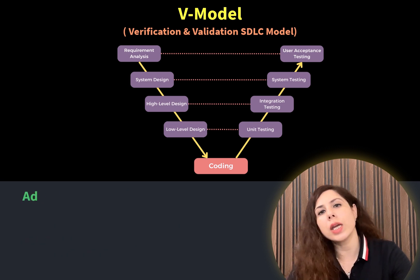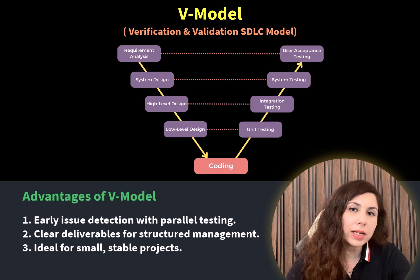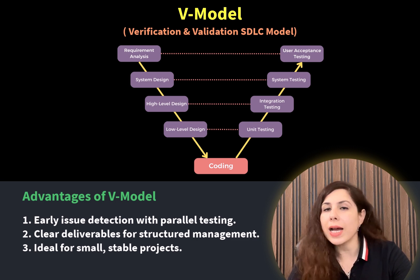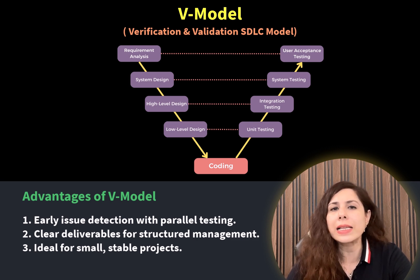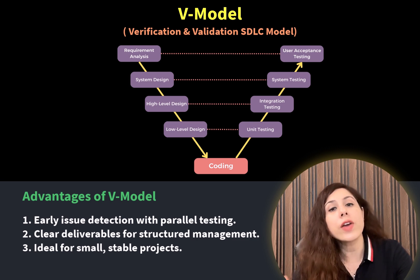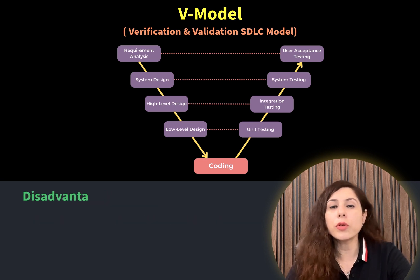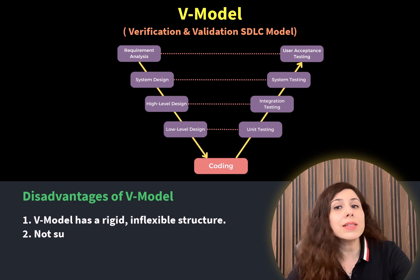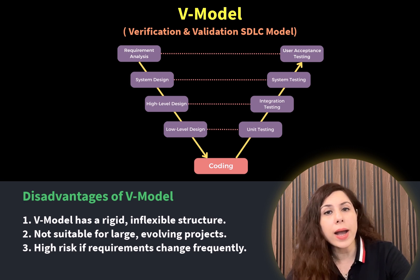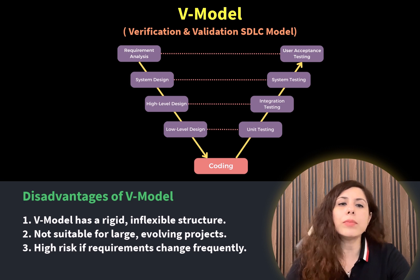Let's discuss some advantages of V-Model. V-Model helps in early detection of issues since testing happens in parallel with development — bugs and issues can be identified and fixed early, saving time and cost. Each phase has clear deliverables, making the process structured and easy to manage. V-Model is well suited for small projects where requirements are clear and unlikely to change. However, V-Model has a rigid structure and is not flexible. Once a phase is complete, it is hard to go back and make changes. For large and complex projects where requirements might evolve, V-Model can be too rigid.